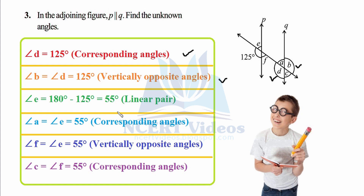Angle e is 55°. Using corresponding angles again, angle a equals angle e, so a is also 55°. Angle f is vertically opposite to e — cross or X formation — so f is also 55°. Finally, angle c can be found using corresponding angles with f (both are 55°), or alternatively since a and c are vertically opposite, c equals a, which is also 55°. There are multiple valid approaches.